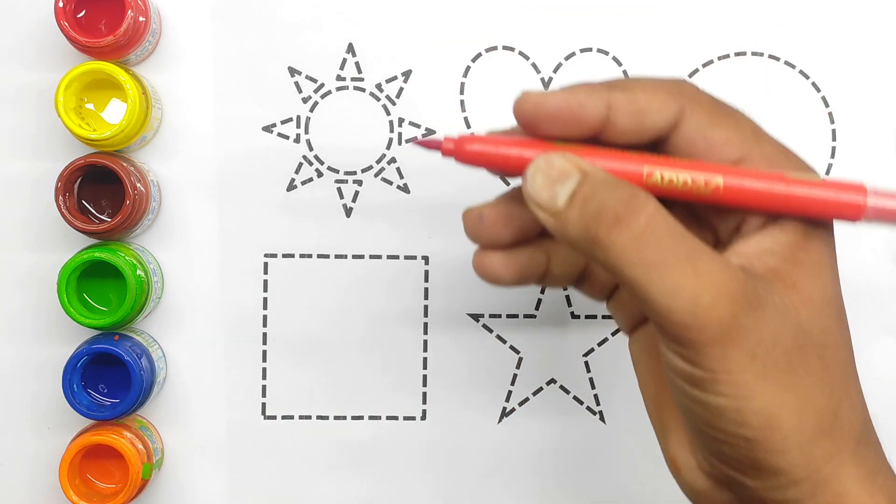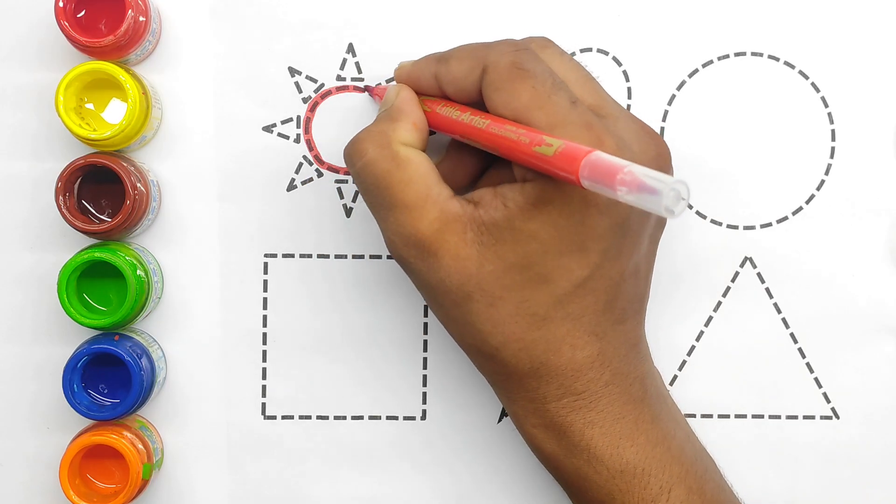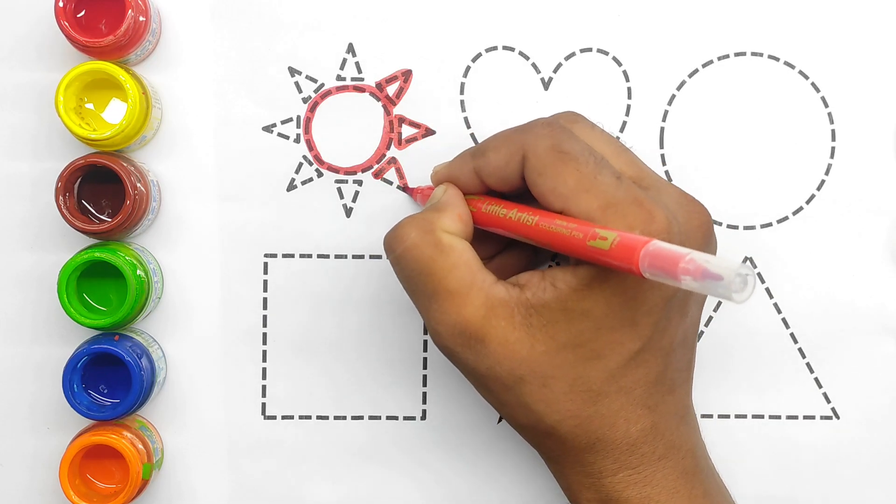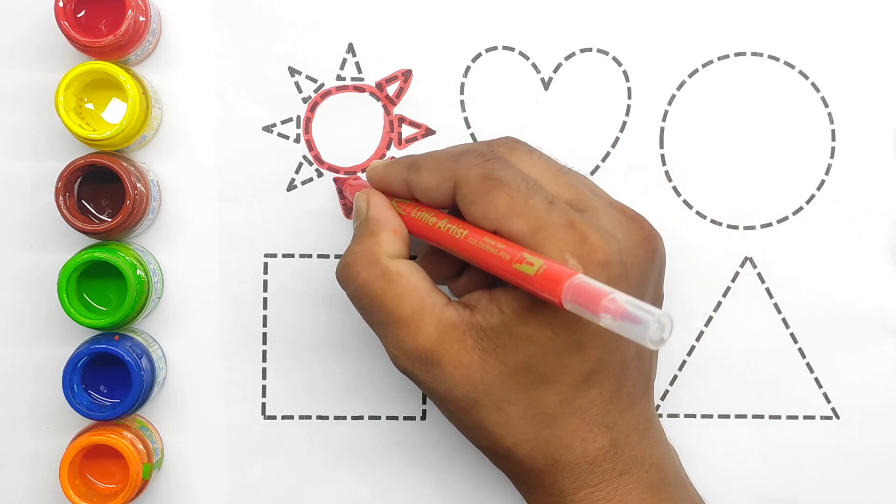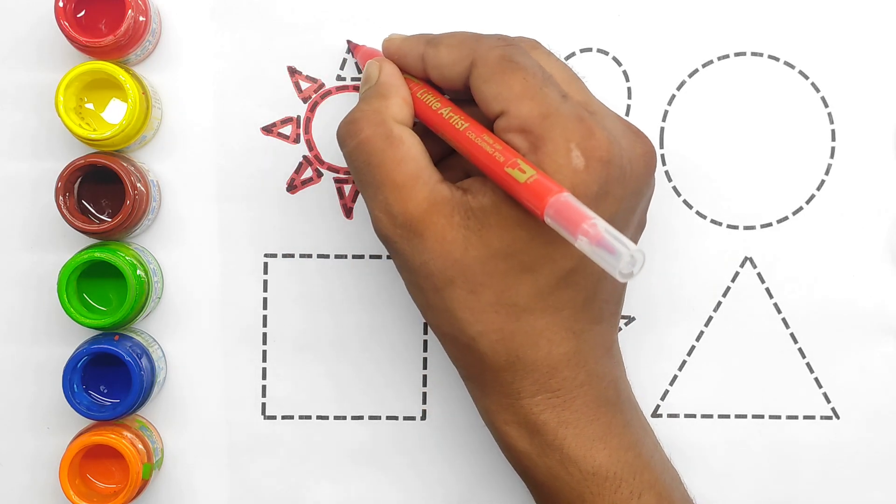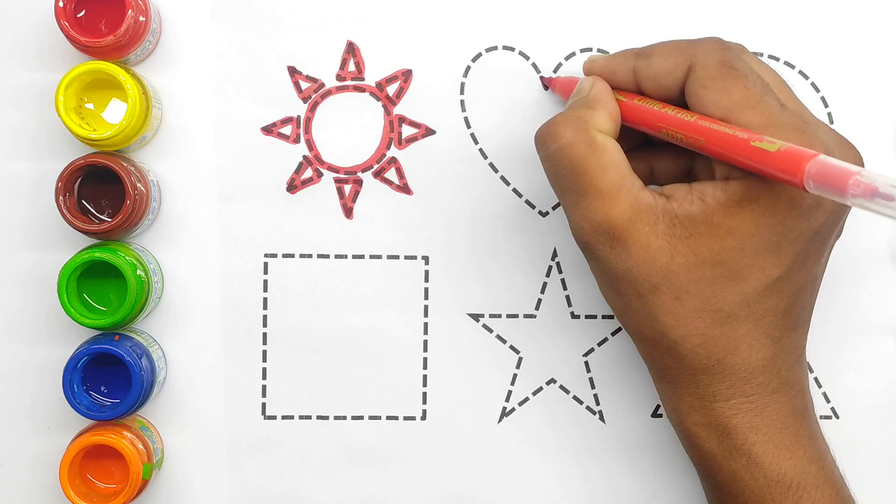This is red color. Sun. This is sun, 2D shape. Sun. Sun, tell me. 2D shape sun.